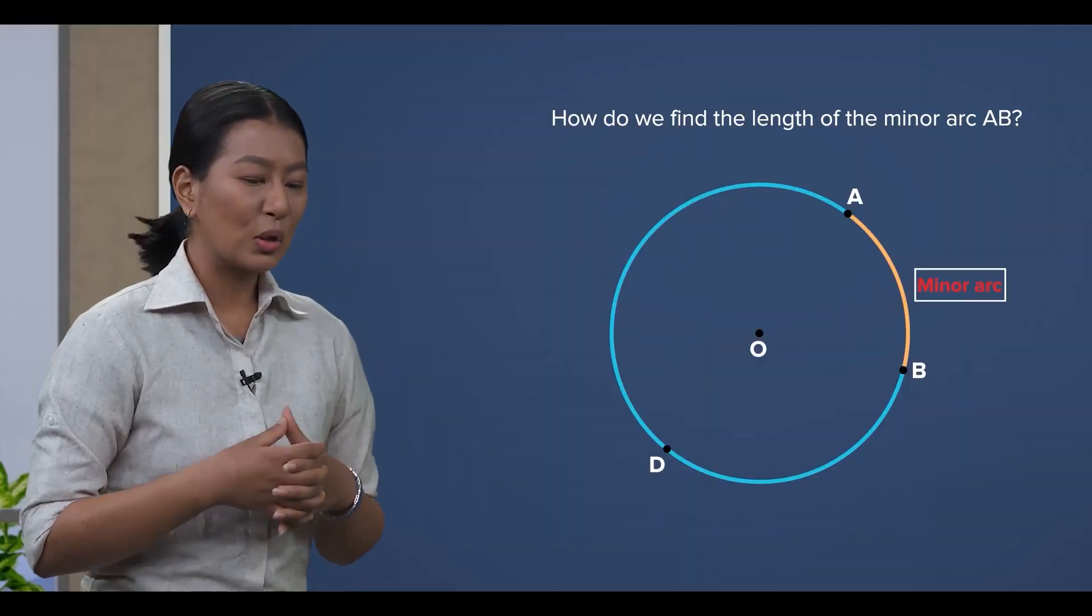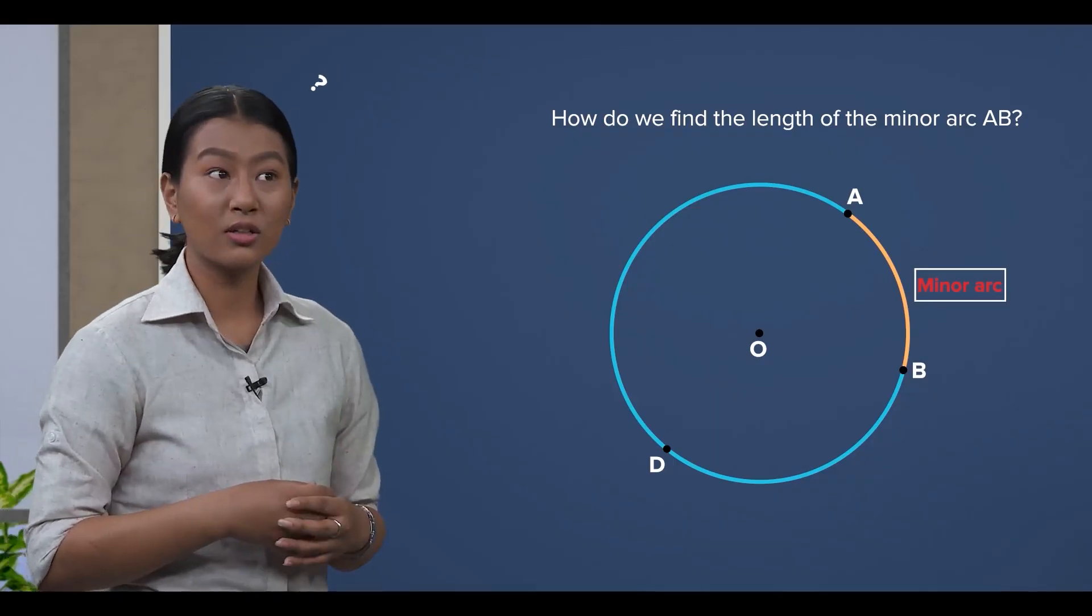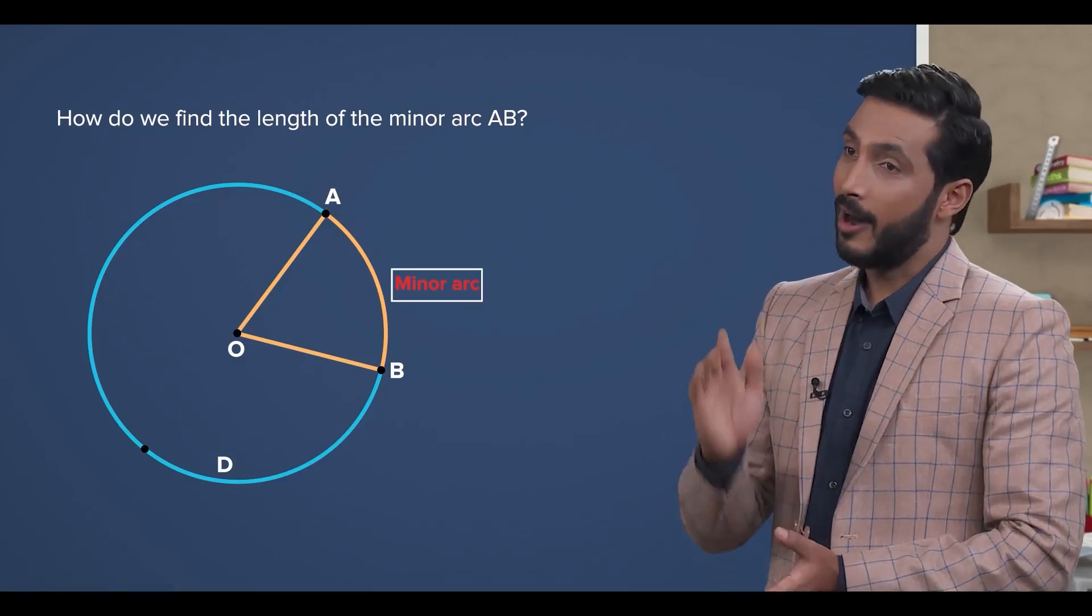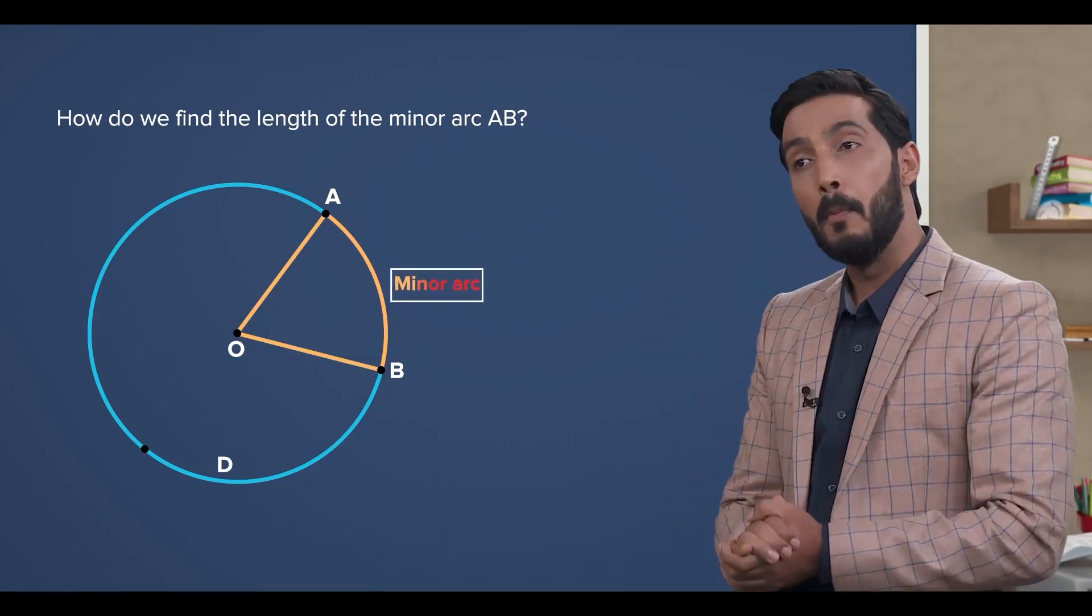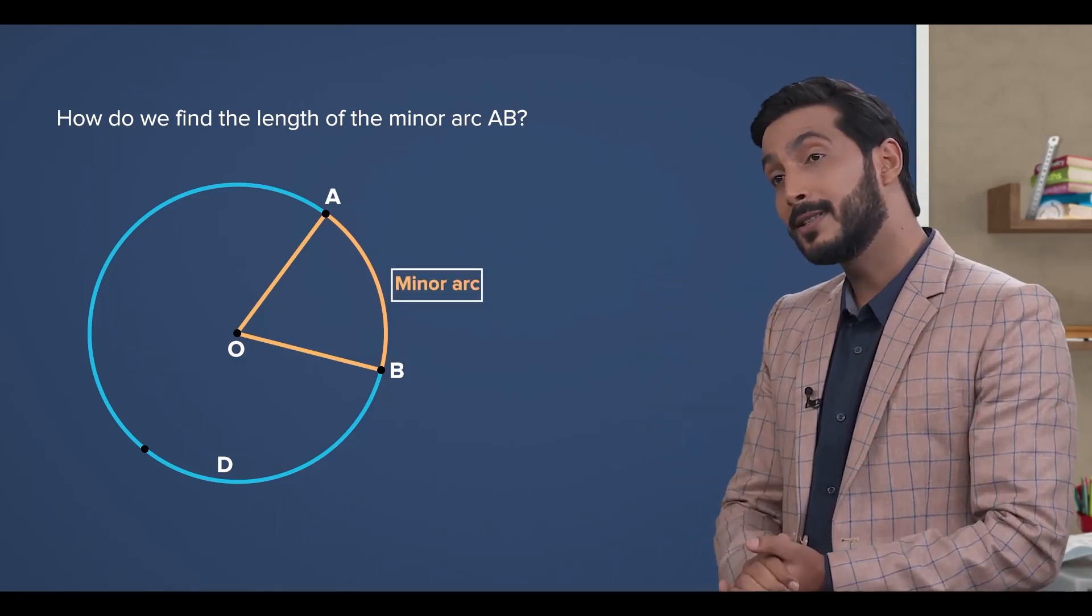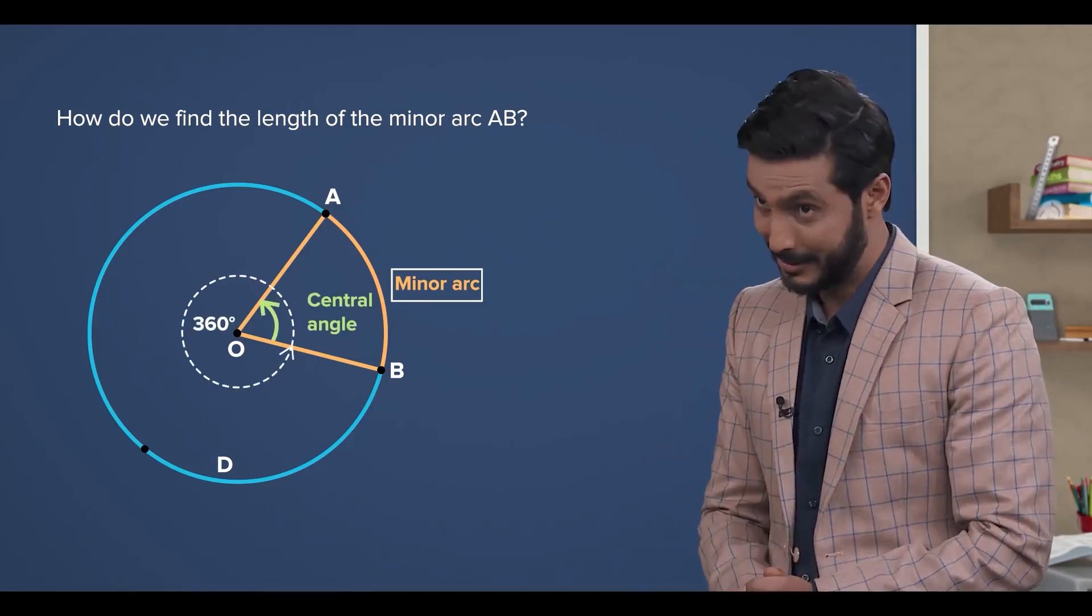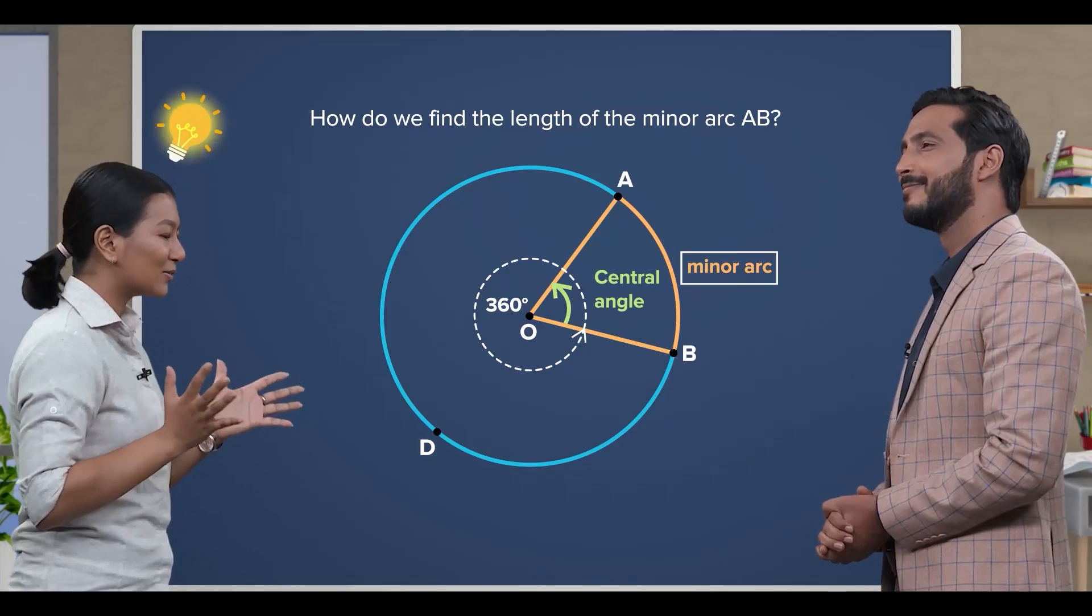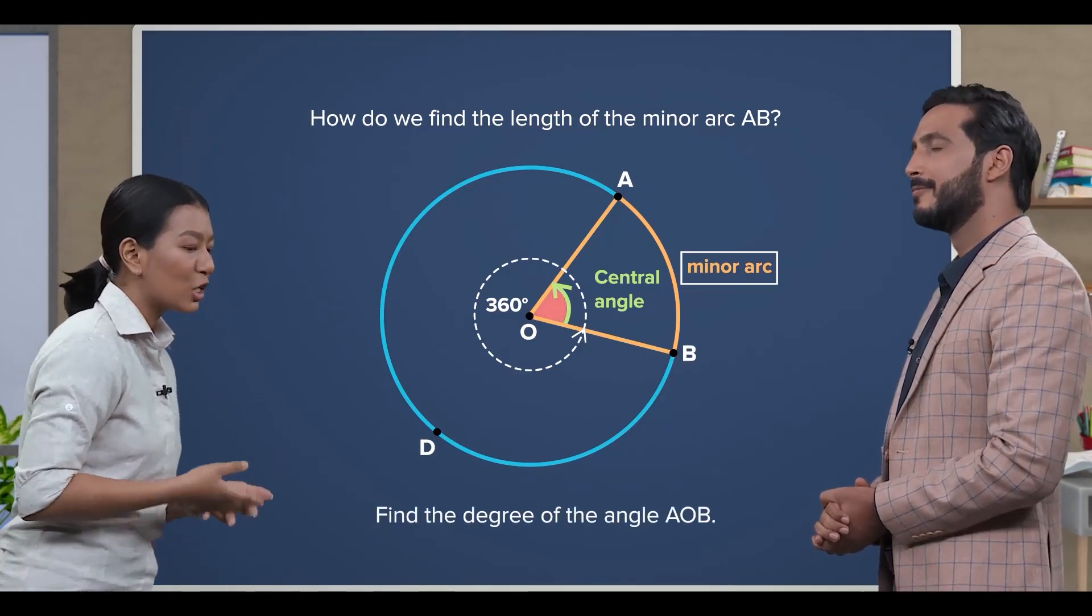Thanks. So, do we need to start with the radius of the circle? Yes. Since the arc is a part of the circle, the ratio of the minor arc to the circumference is equal to the central angle to 360 degrees. Oh, so all I need to know is the central angle AOB so that I can work out the ratio.